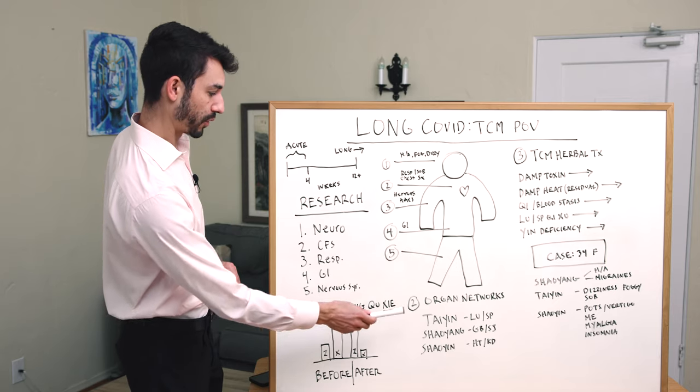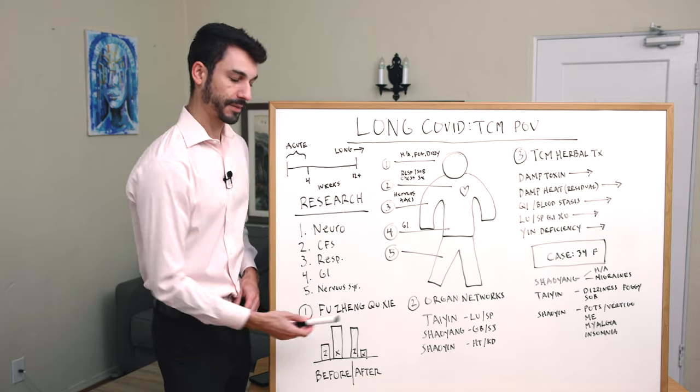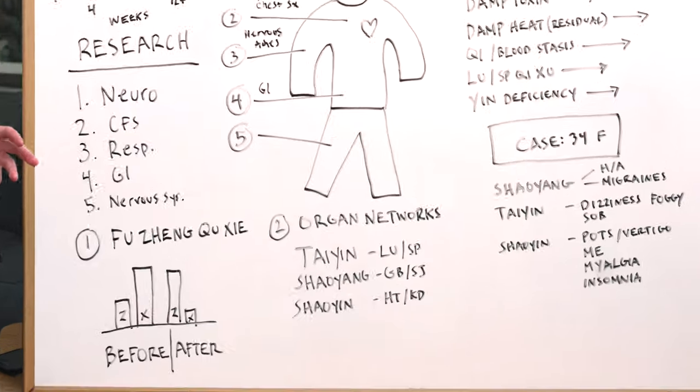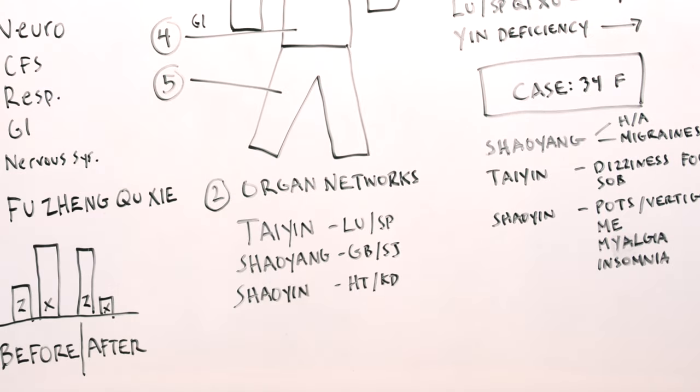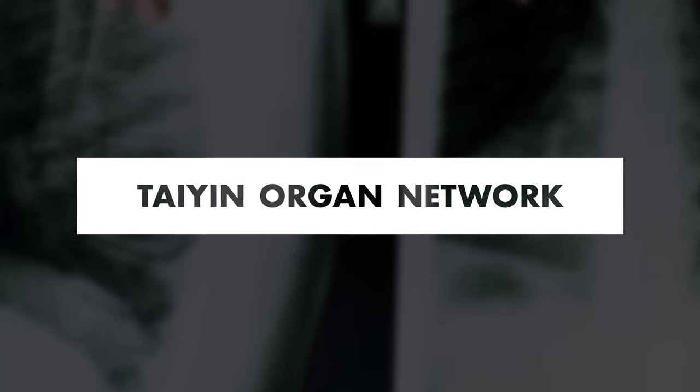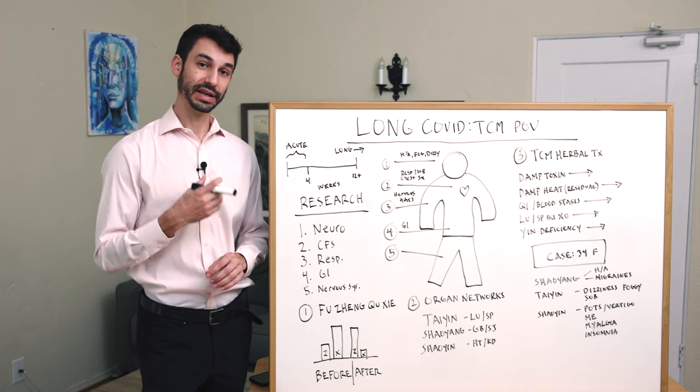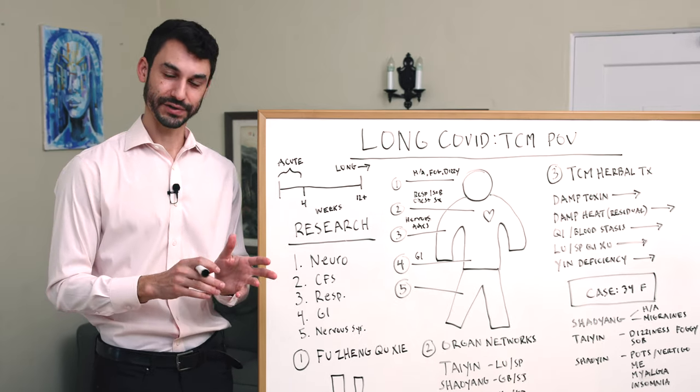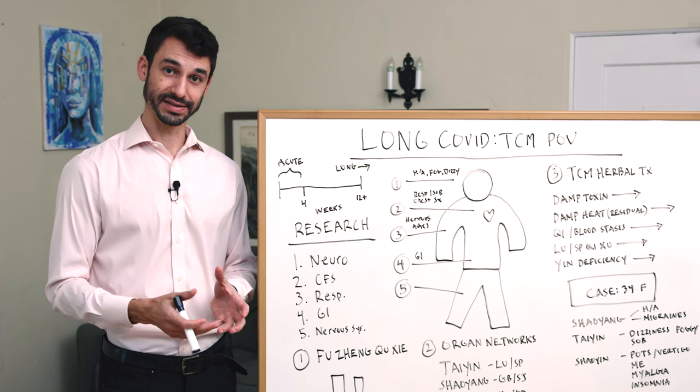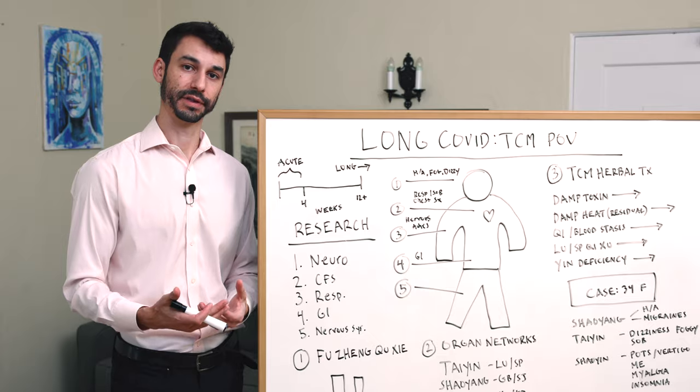Let's talk about the organ networks that are primarily involved. Number one, we see the tai-in lung and spleen organ network. The tai-in organ networks are very important here because the lung is your lung, and the spleen in TCM governs a lot of digestive functions. It is most likely the spleen-pancreas. It deals a lot with digestive enzymes, bloating, food allergies, low immunity.